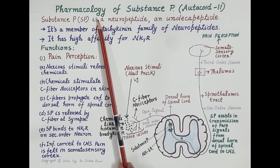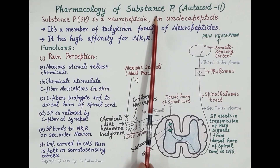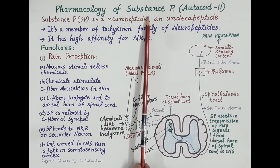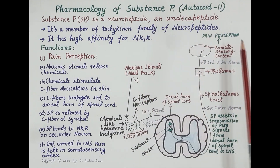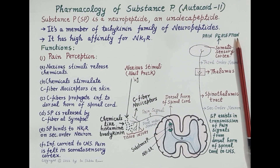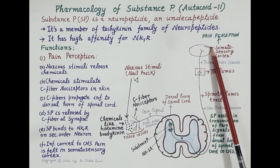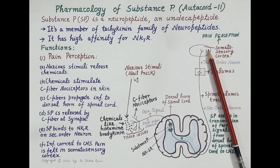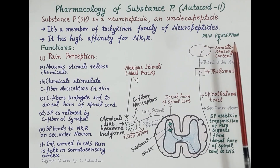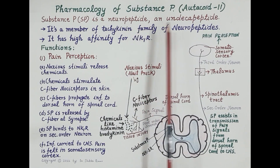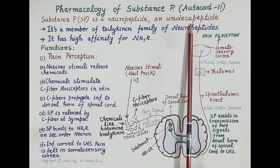Hello students. In today's video we are going to study pharmacology of substance P. The most important function of substance P is the perception of pain. Substance P transmits pain signals from the spinal cord to the brain where pain is felt or experienced. Substance P is a neuropeptide — specifically an undecapeptide, meaning it is made up of 11 amino acids.